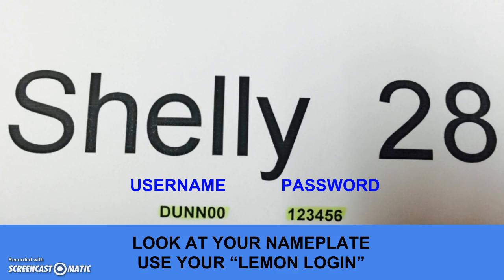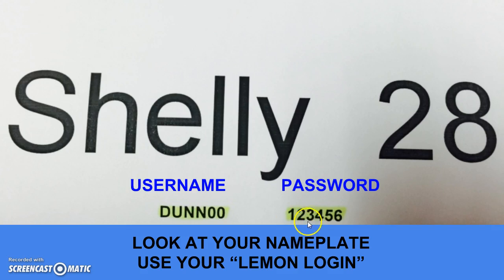You will find your username and password on your nameplate that has your first name and your computer number. Your user number and your password are highlighted in yellow — I call them your lemon login. The first number is your username, usually your last name with two numbers, and your password is the second number, which has six numbers.